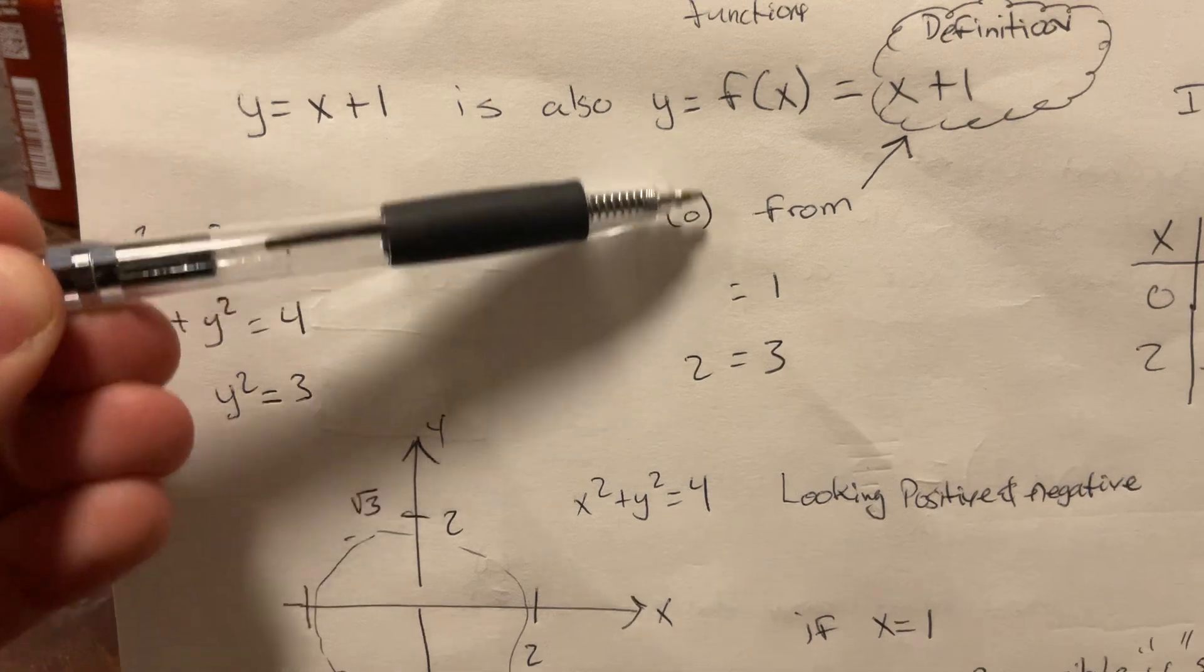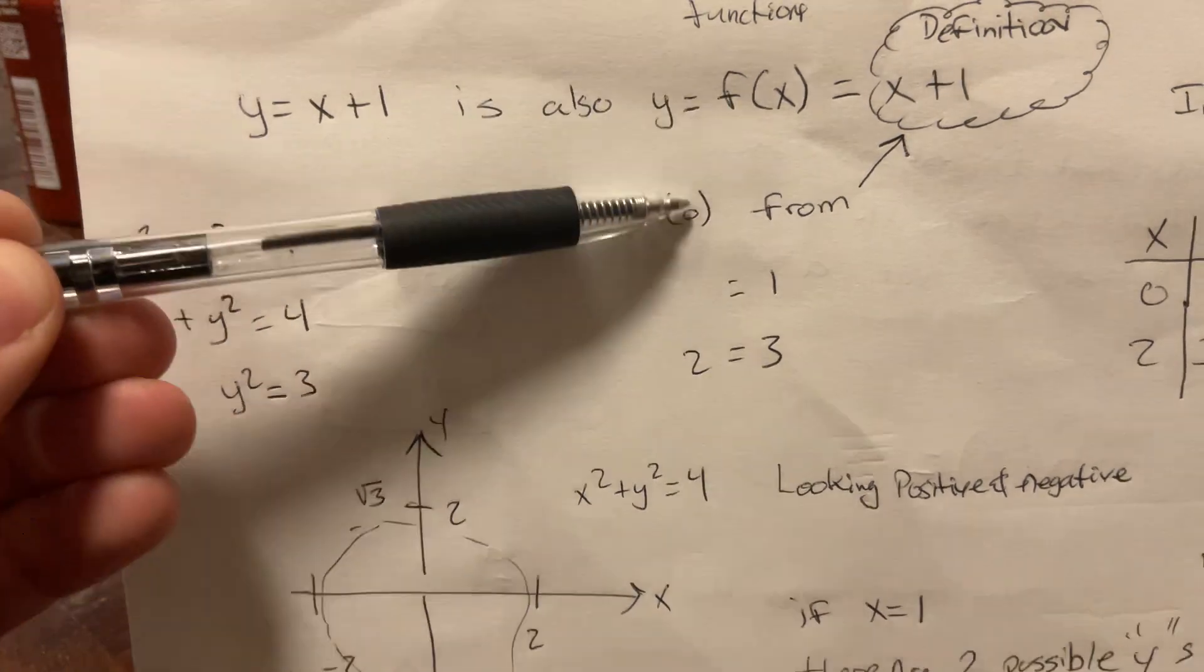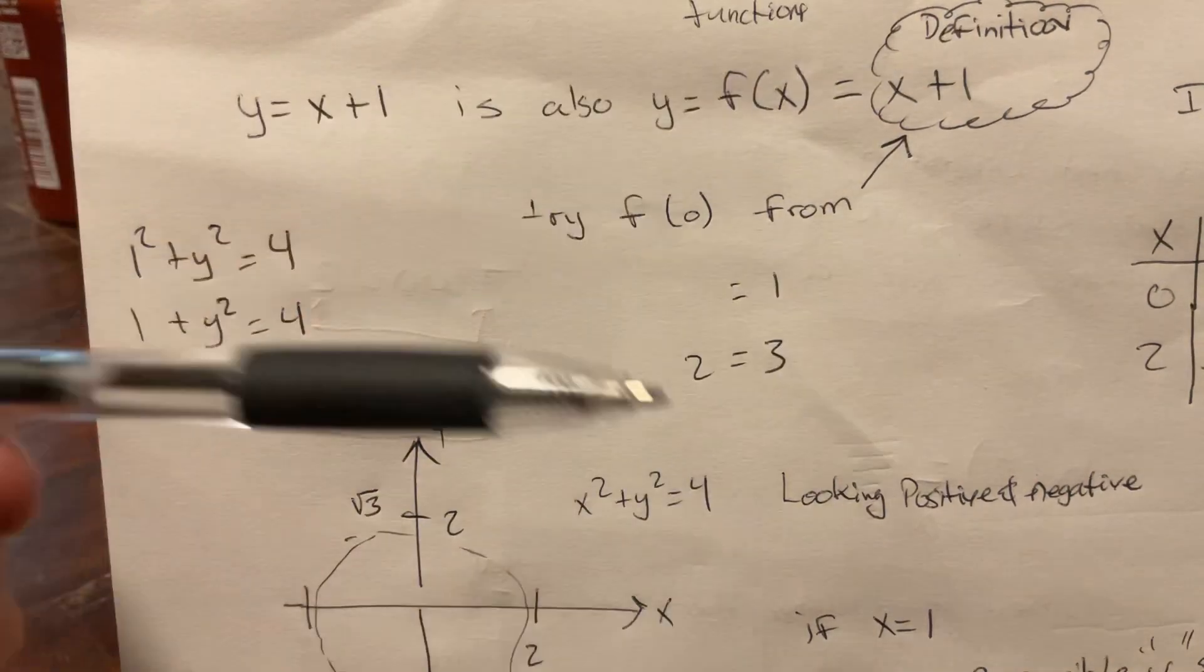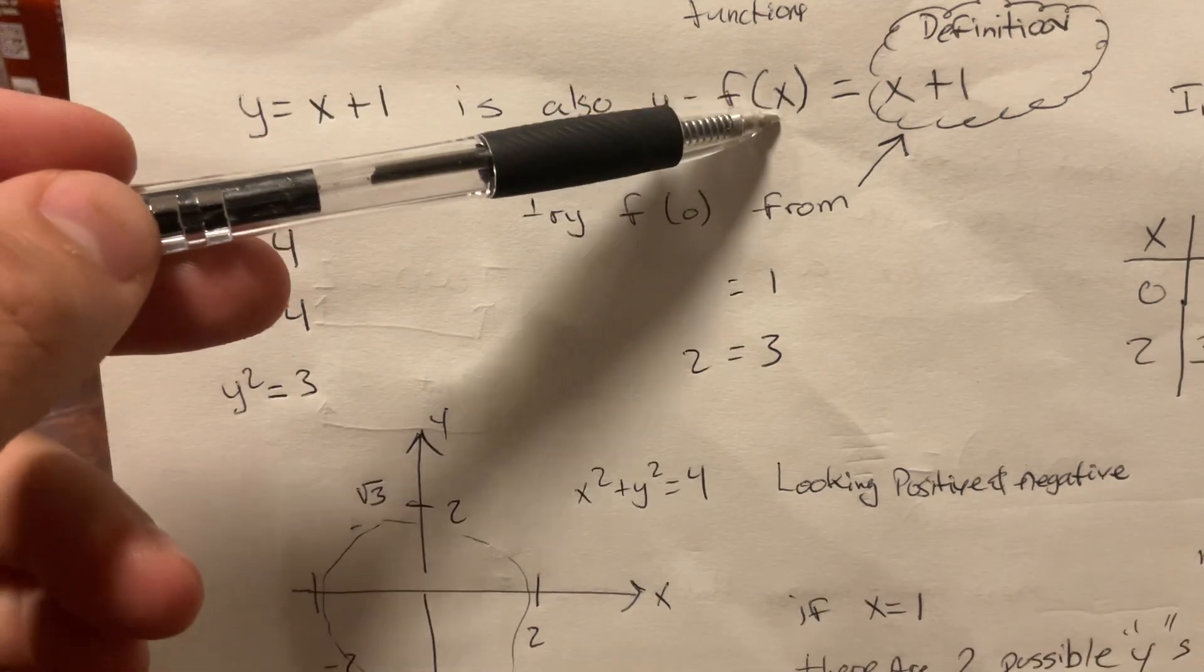So if we gave this input 0, we would get 1. If we gave this input 2, we would get 3.